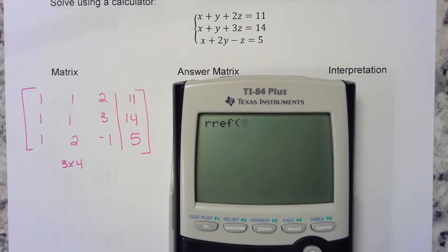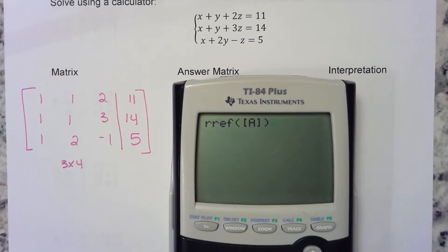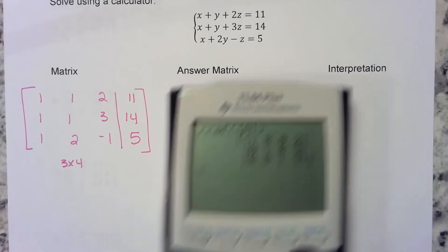You have to tell it which matrix to do that to, so go back to matrix and choose the one you're talking about. Now you've told your calculator to put matrix A in reduced row echelon form, and we get this—that's your answer matrix.